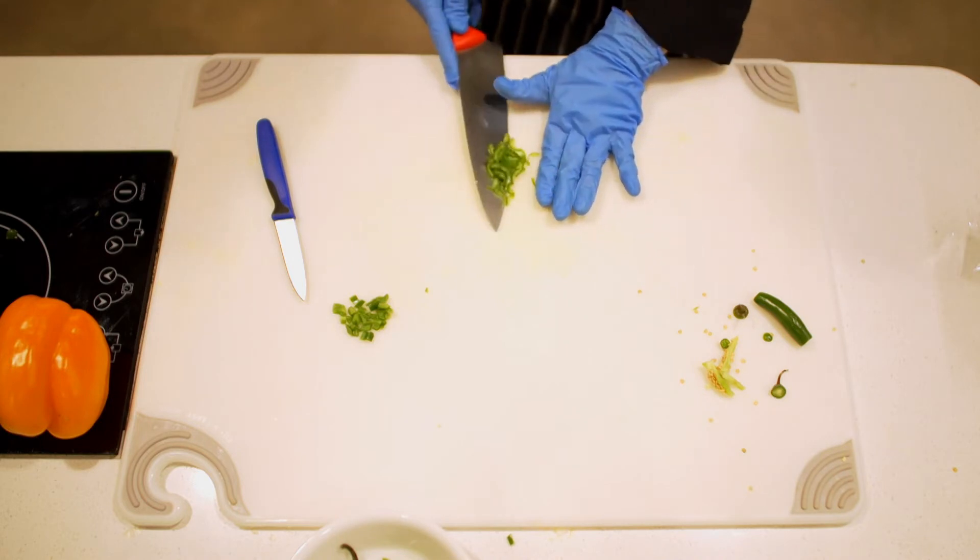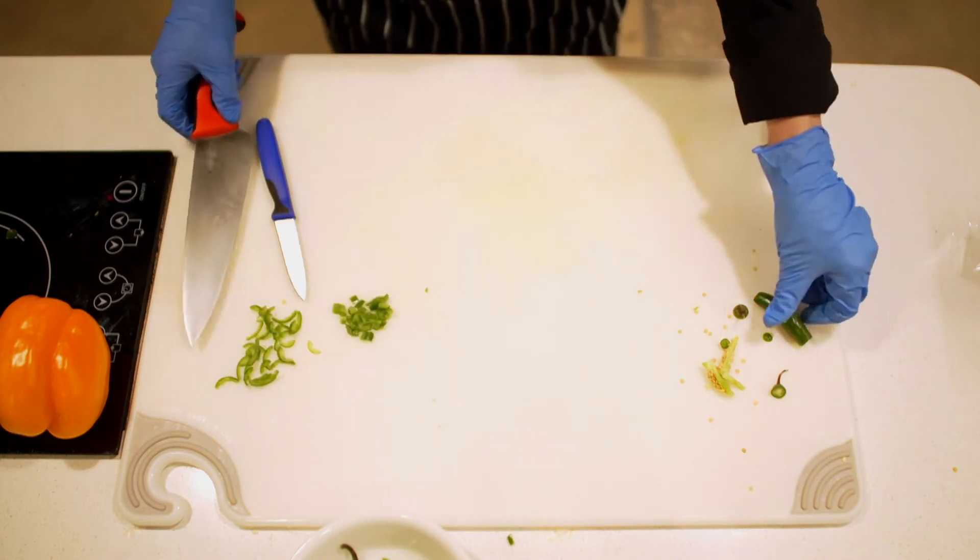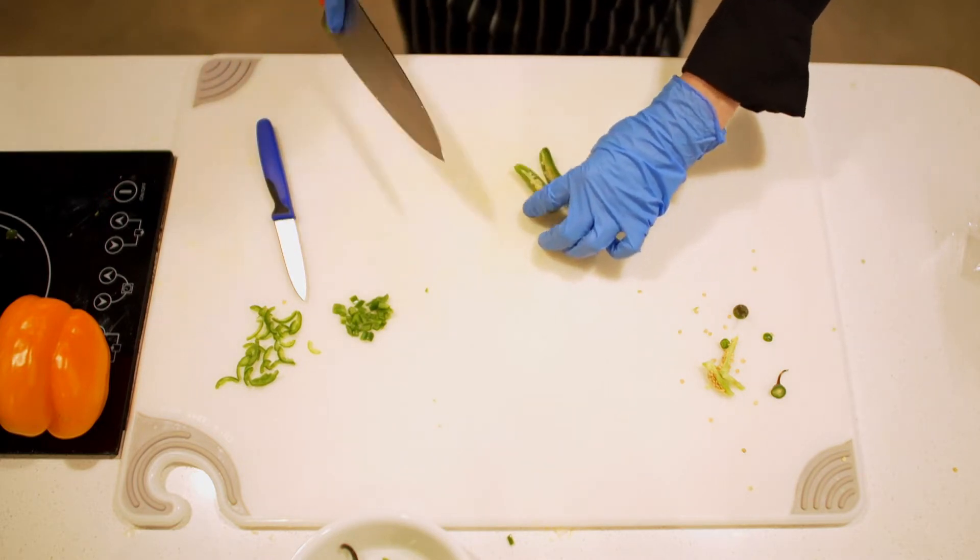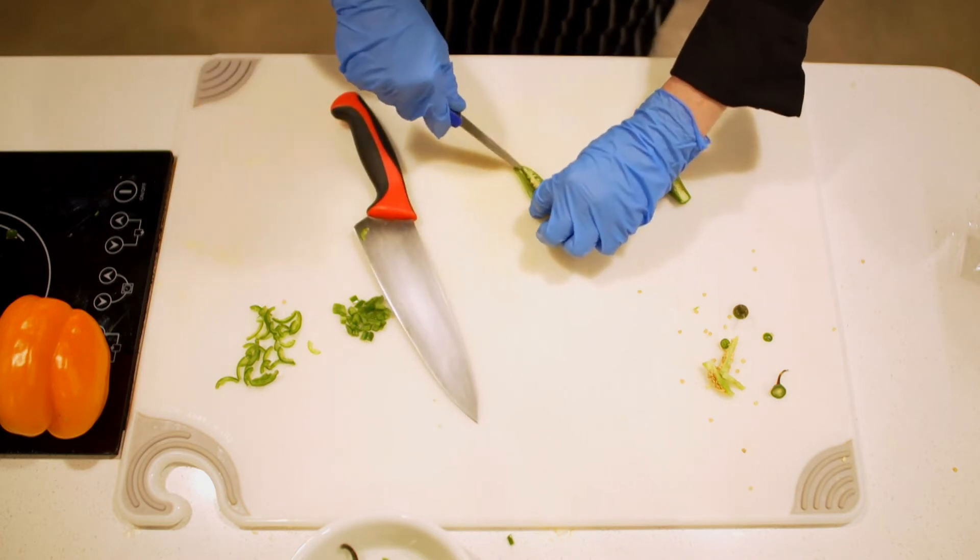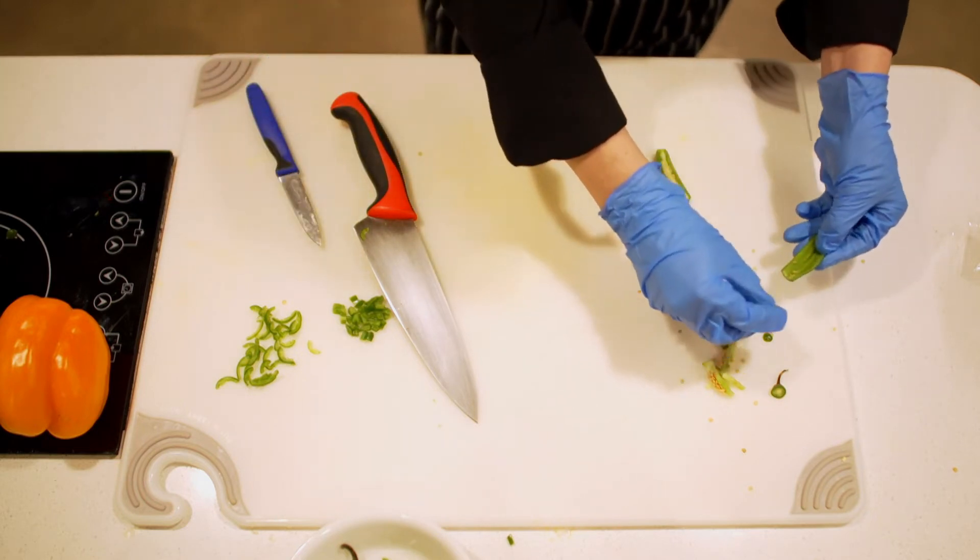When you're using these chilies, I do think that a lot of people appreciate a very small dice. It's harder to accomplish with the paring knife, so when you're comfortable with the French knife, use that. Notice I'm cutting away from my hand to get that rib and seeds out of there.